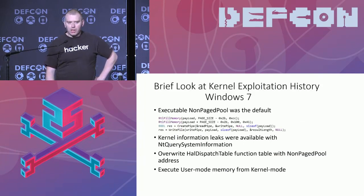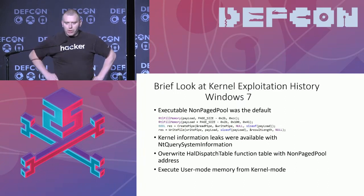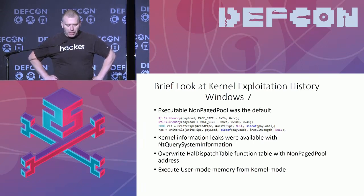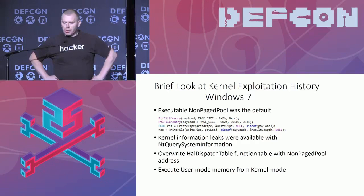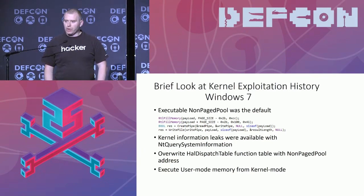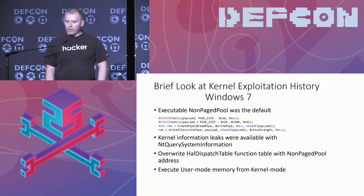Looking at Windows 7, it was actually quite easy back then. First you could just allocate code directly to the non-paged pool because it was executable. Then you use the built-in APIs of the operating system to return the address of the allocation. Then you use the write-what-where to overwrite a function address like in a HAL dispatch table and just call that to get your code executed in the kernel. Even easier, you can actually allocate user mode memory and execute that from the kernel as well.